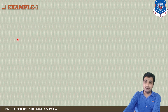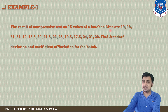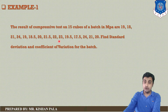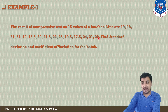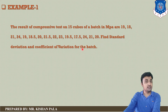Now let us move to the numericals based on statistical quality control of concrete. The results of compressive tests on 15 cubes, in Megapascals, are: 19, 18, 21, 24, 19, 18.5, 20, 21.5, 22, 23, 19.5, 17.5, 24, 21, and 20. These are the results of 15 cubes, and you have to find the standard deviation and coefficient of variation for this batch.